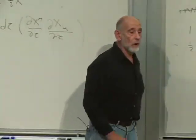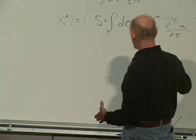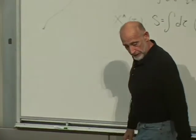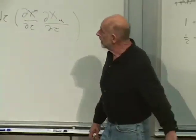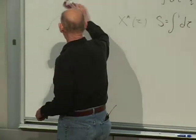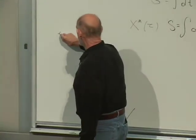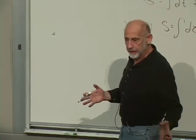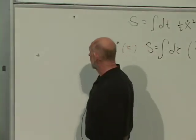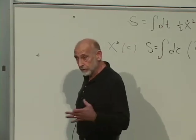In quantum mechanics you do something totally different with the action. You don't ask what is the trajectory given two endpoints — the answer there is of course a straight line with constant velocity. Instead, you ask what is the amplitude that a particle which started at this point, at the start of the time interval, is detected at that point at a later time. You don't ask what's the trajectory in between; you ask what's the amplitude for the particle to go from here to here.